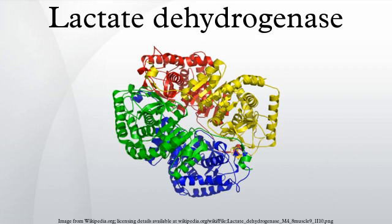Lactate dehydrogenase is an enzyme found in animals, plants, and prokaryotes. It is of medical significance because it is found extensively in body tissues, such as blood cells and heart muscle. Because it is released during tissue damage, it is a marker of common injuries and disease.